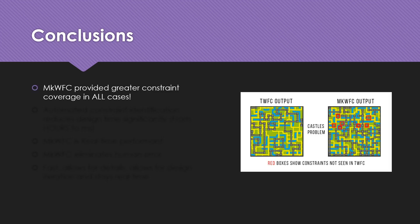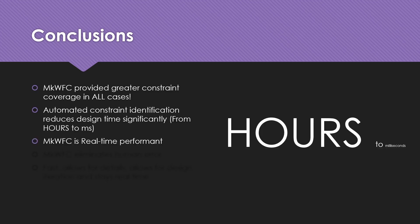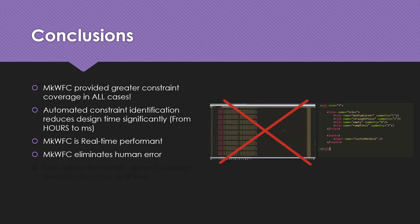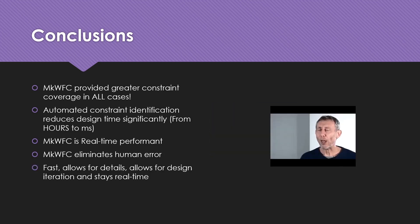Some conclusions from our experiment: MKWFC provided greater constraint coverage in all cases. By automating constraint identification, we reduced design time significantly from hours to milliseconds. MKWFC is still able to perform in real time. It also eliminates human error through automation, removing the requirement for designers to manually hand-curate metadata. By being fast, allowing for detail, and enabling design iteration, Markov wave function collapse maintains real-time performance and provides greater diversity than tiling wave function collapse.